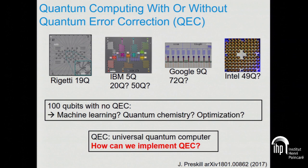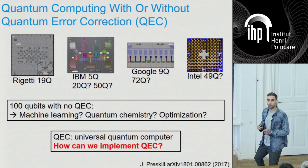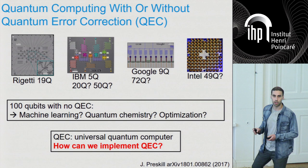Quantum error correction: at the end of the day, if you want to build a big quantum computer to run Shor's algorithm, for example, you're going to have to take one of these chips and make it much bigger, and on top of that you're going to have to put error correction on it. So unless you have some incredibly good qubits which are somehow topologically protected — and that has not yet been demonstrated — you will need a layer of error correction to do any sort of meaningful quantum computing.